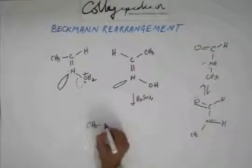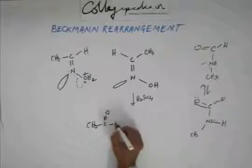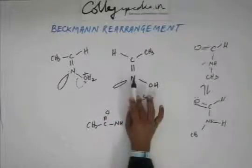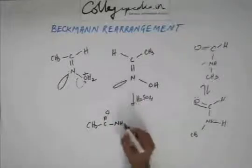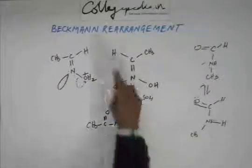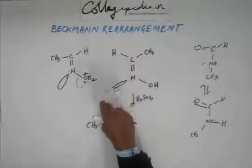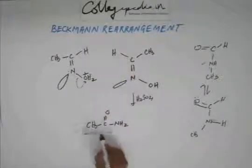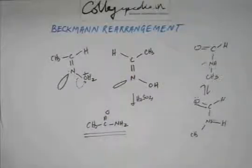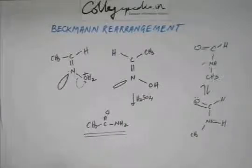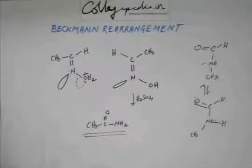So the carbon develops C double bond O, and this nitrogen — this hydrogen comes to this nitrogen, so this becomes NH2. This will be the final product. This will be ethanamide. That's how you quickly write the product.